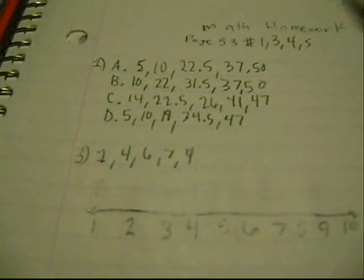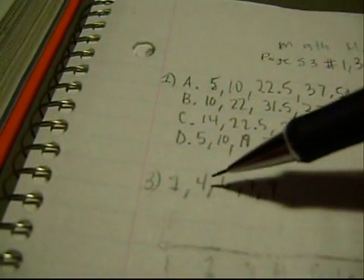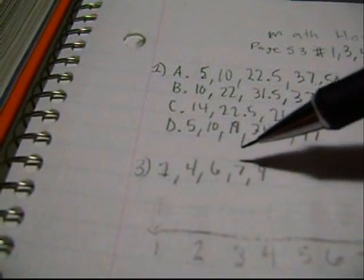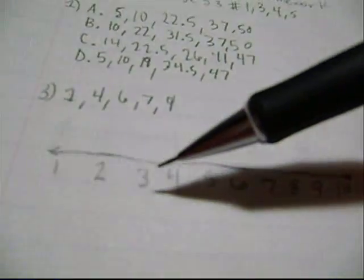Okay, this is how to make a box and whisker plot. So first you'll need your minimum, which is one, your lower quartile, your median, third quartile, and your maximum.